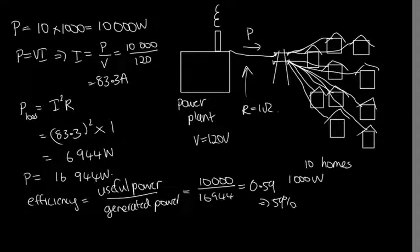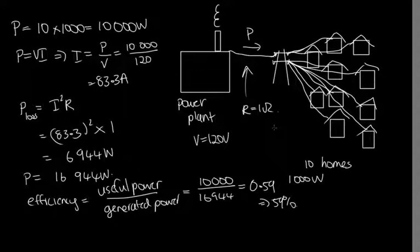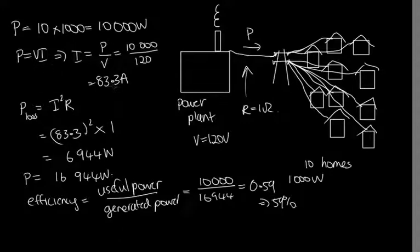What can we do to improve that efficiency? If we can't reduce the resistance of this wire — presumably it's been designed with as little resistance as possible — the only other option is to reduce the current. But if we want to carry the same amount of power with less current, we're going to have to increase our voltage. If we increase the voltage, we reduce the current and hence the power loss.